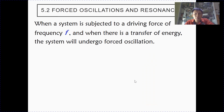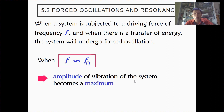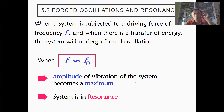For forced oscillation, you have a driving frequency, and this driving frequency transfers energy to the driven system. When this driving frequency is close to the natural frequency of the system, there is a maximum transfer of energy and the amplitude becomes a maximum — this is the phenomenon of resonance. For example, if the spinning drum of a washing machine spins at a frequency that matches the natural frequency of the washing machine, you get extraordinary vibration and the amplitude is at a maximum.